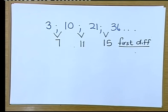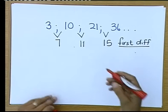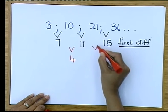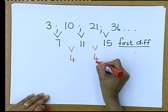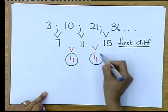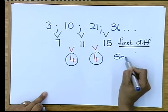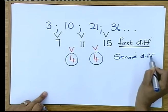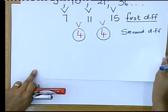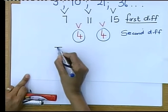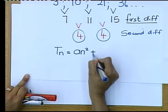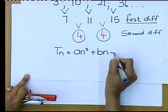So now you don't give up. You go on and you check, what is my difference now? 7 and 11 is 4, 11 and 15 is 4. What do you see? You see that your second differences, remember this is my second difference, my second differences are the same. If your second differences are the same, you immediately write down the formula TN equals AN squared plus BN plus C.